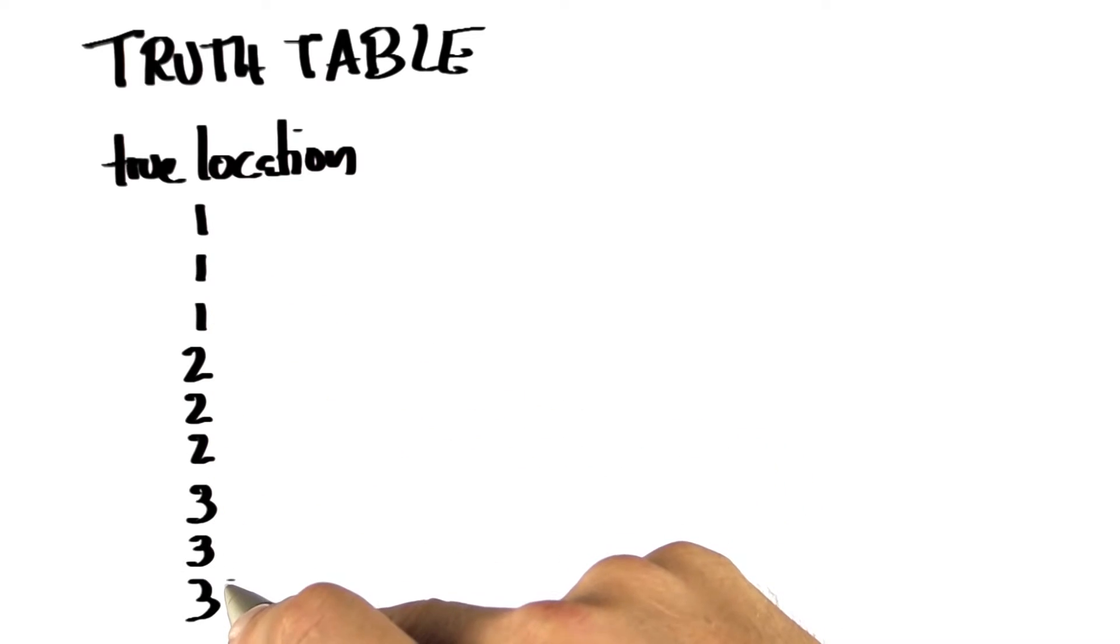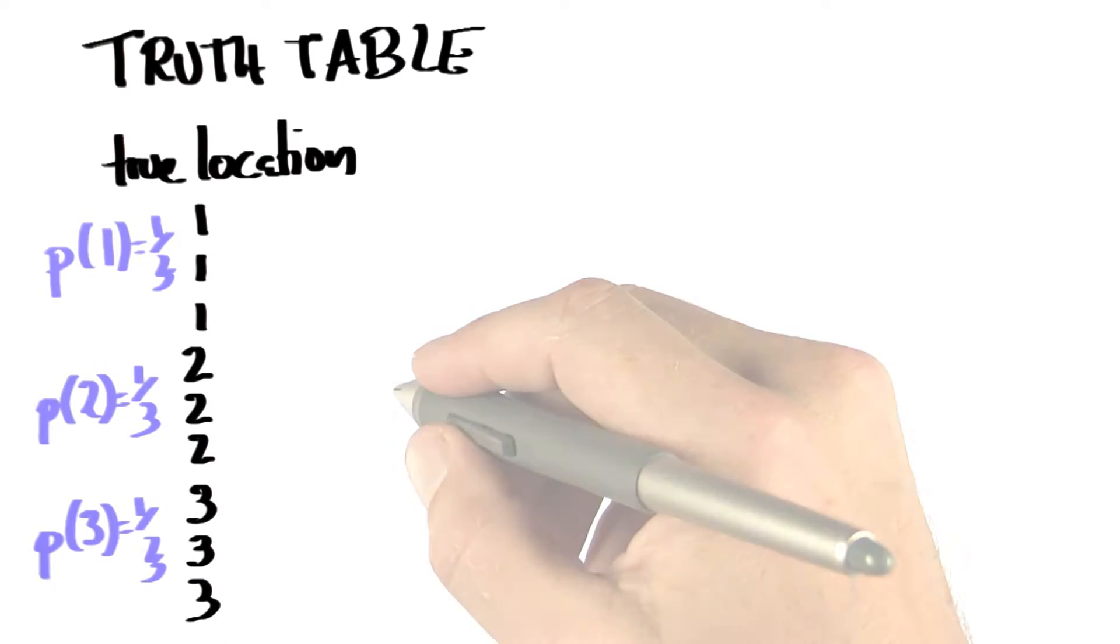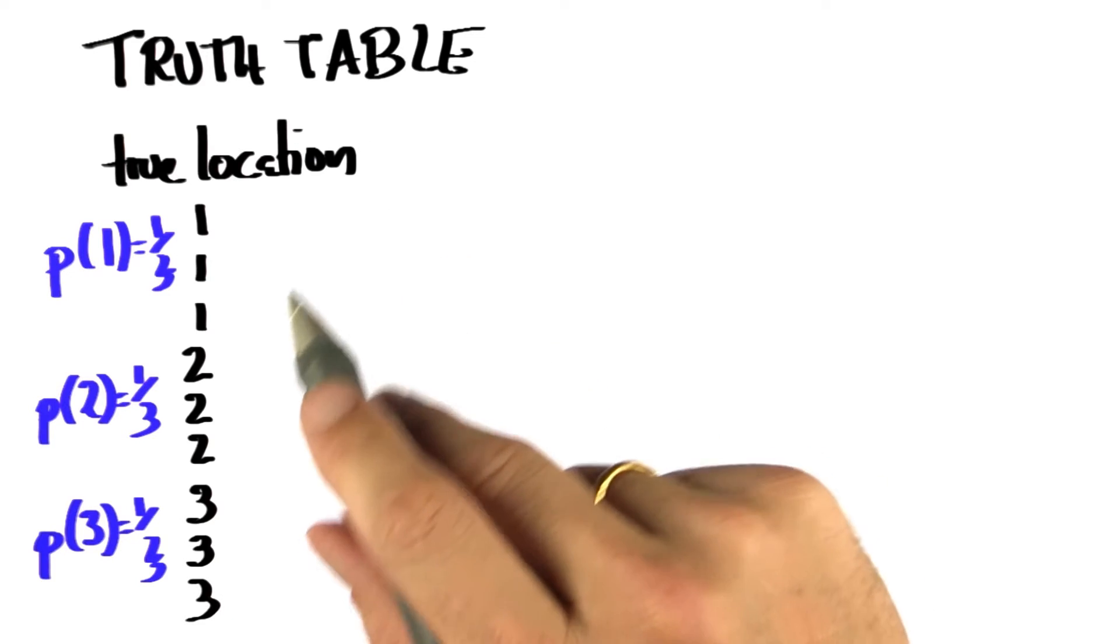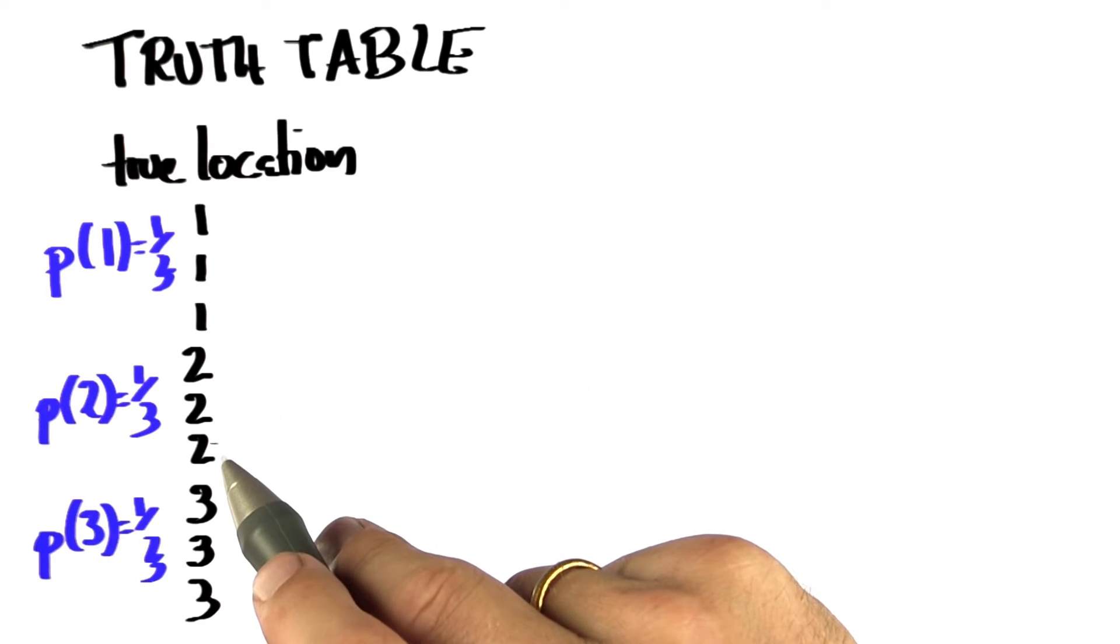And because it's a truth table, I write them multiple times. But we happen to know that any of those has exactly a third probability, and we'll be using this third in a minute.